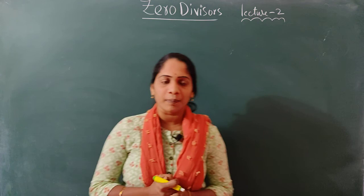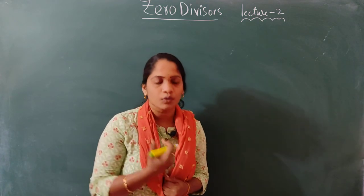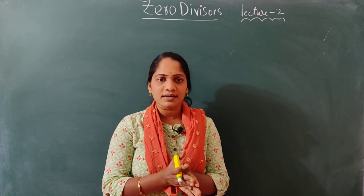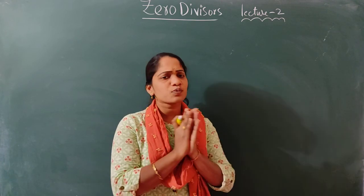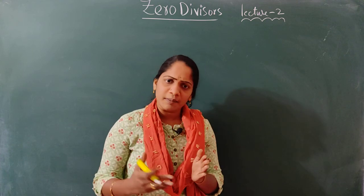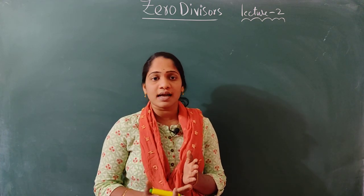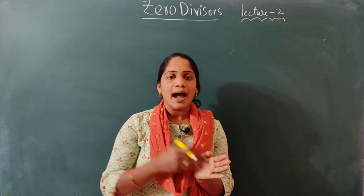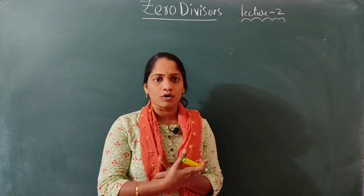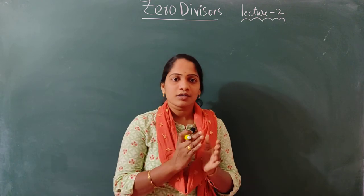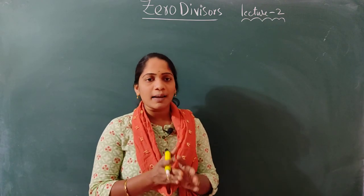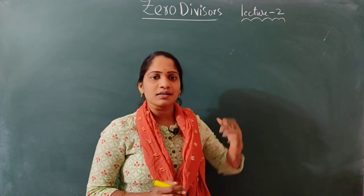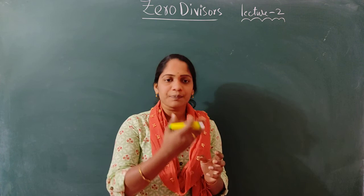Now I am here with another topic in ring theory — Lecture 2 — that is zero divisors. In the previous lecture, Lecture 1, we discussed only what a ring is and a small example of a ring. In coming videos, I am going to explain more examples and the difference between Z5, Z6, addition modulo, and multiplication modulo, which are very helpful for you.